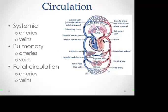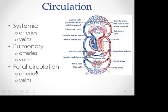Circulation is described under three headings: systemic circulation, which goes to the whole body except the lungs — always consisting of arteries and veins; pulmonary circulation, which goes to and comes back from the lungs; and fetal circulation, which is different because the lungs are not functioning and the placenta acts as the lungs, so there are some additional structures.